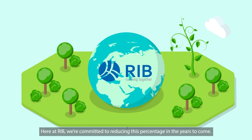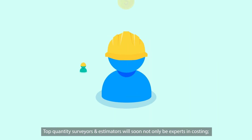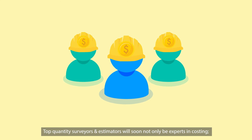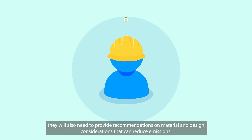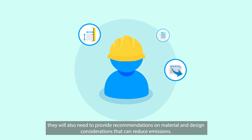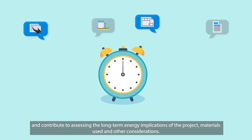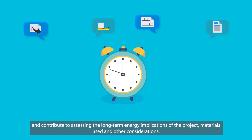Here at RIB, we're committed to reducing this percentage in the years to come. Top quantity surveyors and estimators will soon not only be experts in costing — they will also need to provide recommendations on material and design considerations that can reduce emissions. This insight will allow the quantity surveyor or estimator to be more involved in early stage design and material discussions, and contribute to assessing the long-term energy implications of the project.